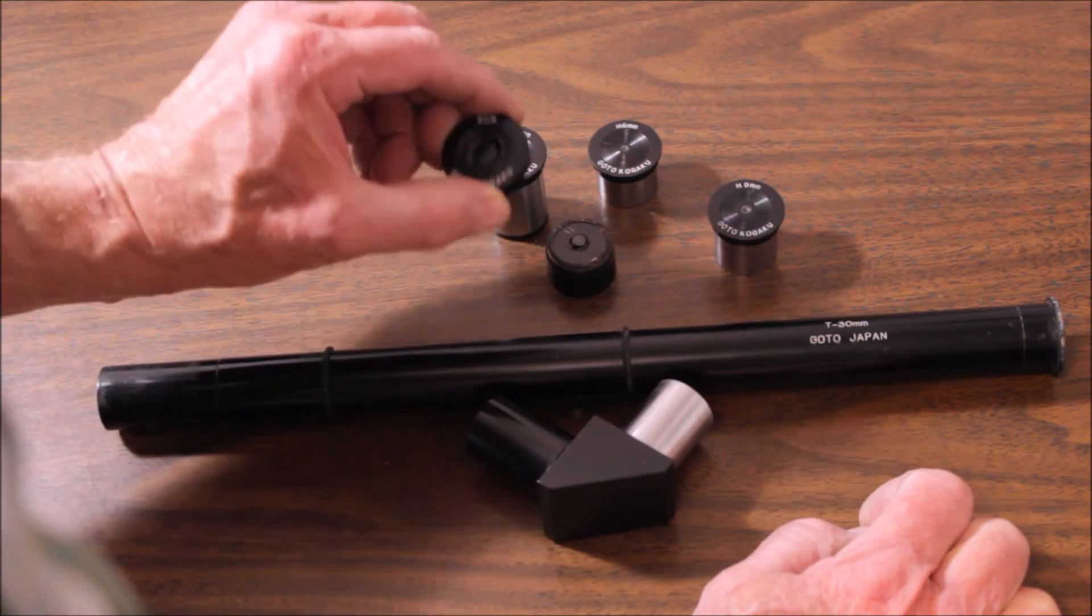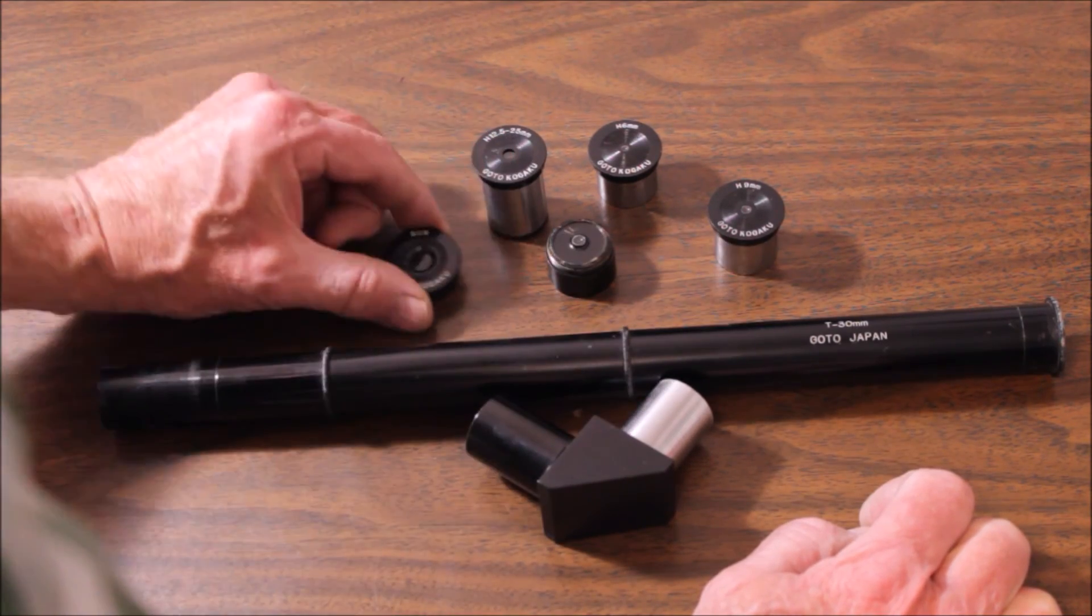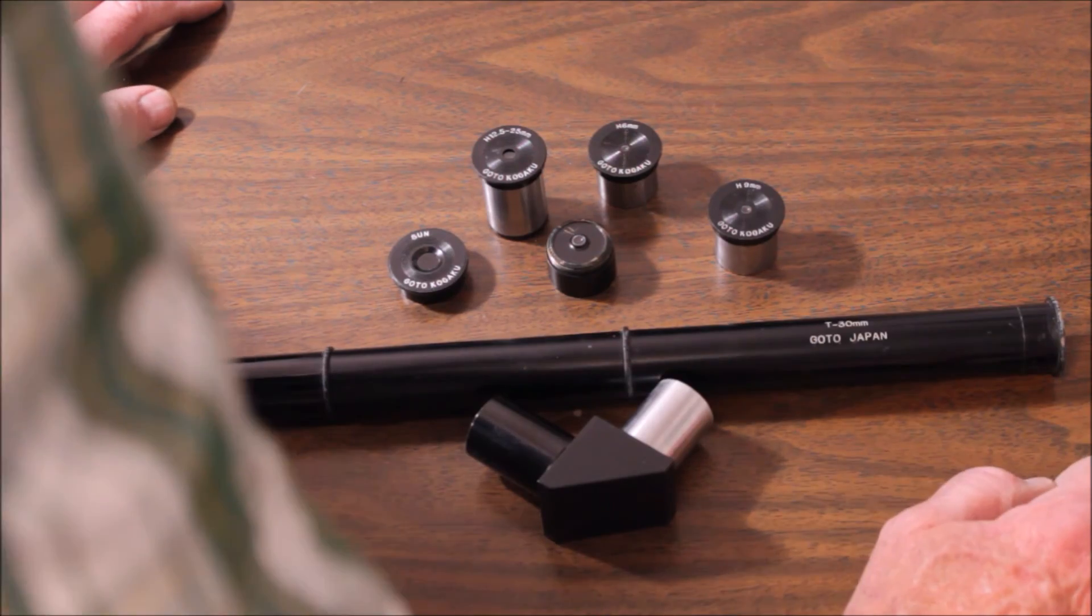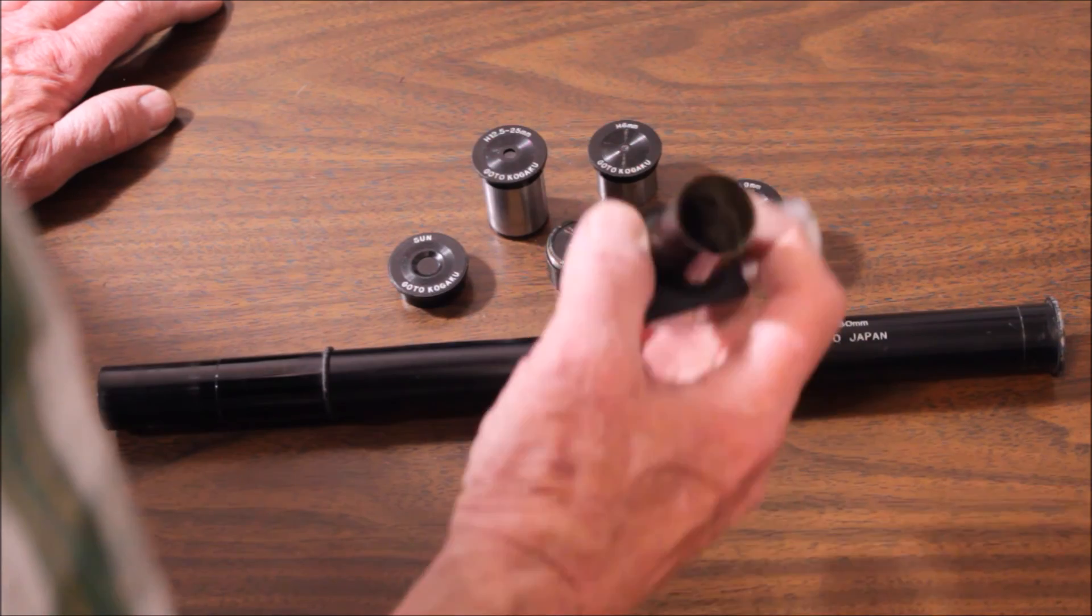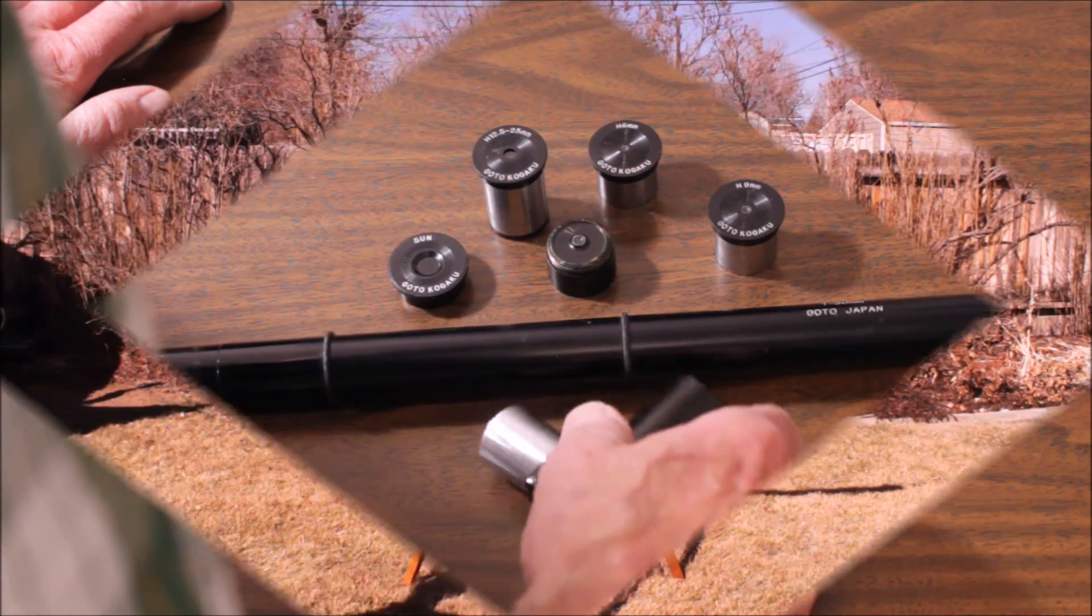And then there's the dreaded sun filter. You, of course, do not use those. So that goes on the cap of any of the eyepieces. You remove the little nameplate. Here's a nice Goto star diagonal.